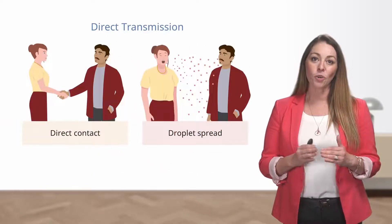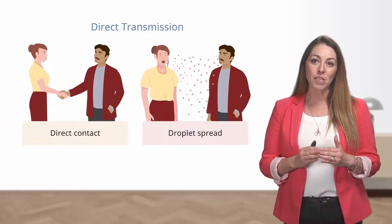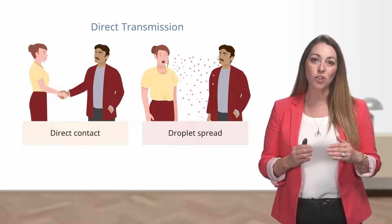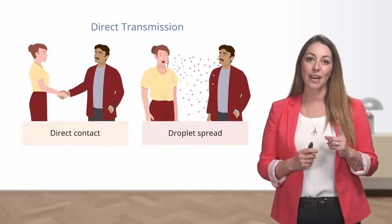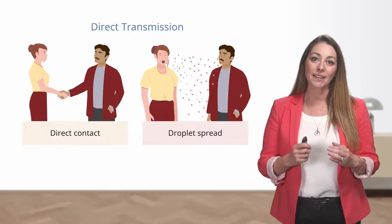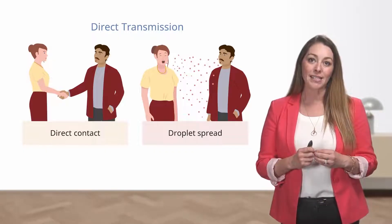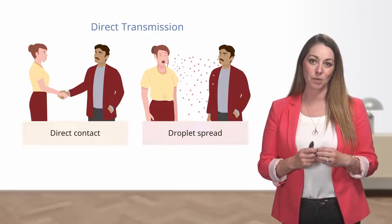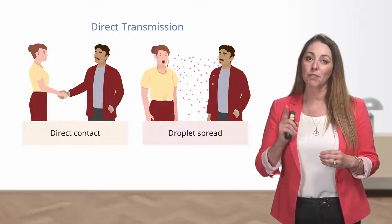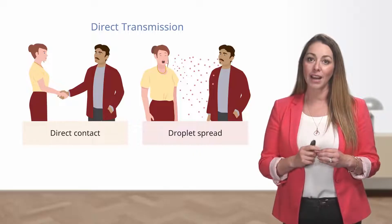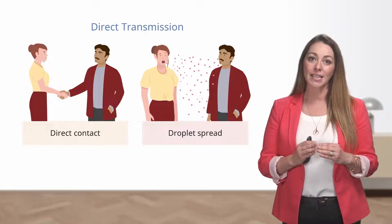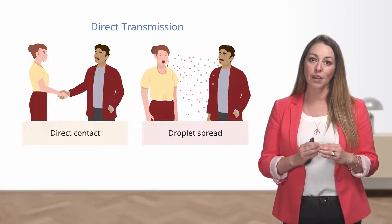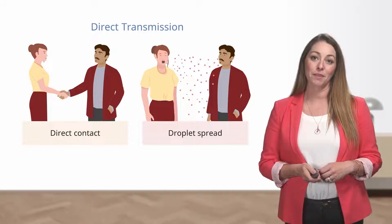Remember, in order for infection to be spread through a droplet, an individual needs to be in close contact with the infected individual. In the next couple of slides, I'll explain how this is different from airborne transmission. But before we move on, remember that both direct contact and droplet spread are forms of direct transmission.